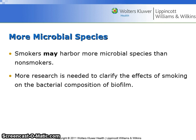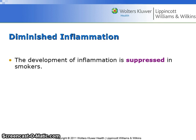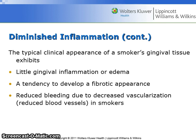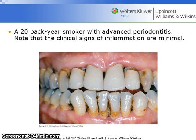Smokers may harbor more microbial species than non-smokers, though more research is needed to clarify the effects of smoking on the bacterial composition of biofilm. The development of inflammation is suppressed in smokers. The typical clinical appearance of a smoker's gingival tissue exhibits little gingival inflammation or edema, a tendency to develop a fibrotic appearance, and reduced bleeding due to decreased vascularization and decreased numbers of blood vessels.